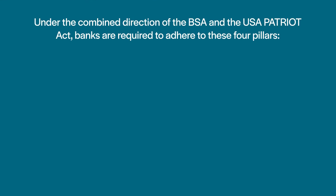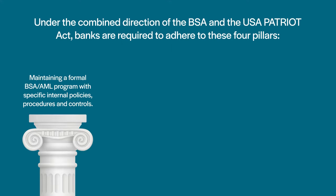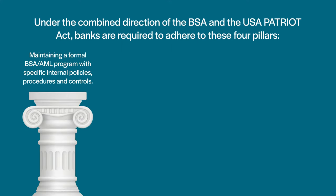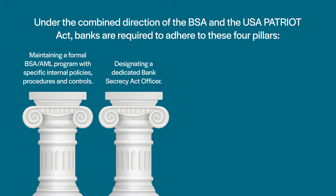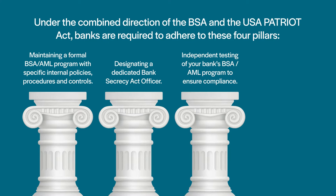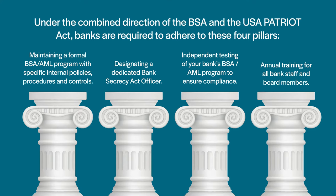Under the combined direction of the BSA and the Patriot Act, banks are required to adhere to these four pillars: maintaining a formal BSA AML program with specific internal policies, procedures, and controls; designating a Bank Secrecy Act officer; independent testing of your bank's BSA AML program to ensure compliance; and annual training for all bank staff and board members.